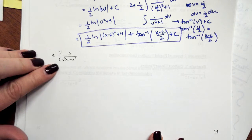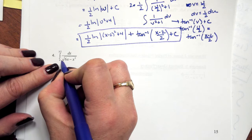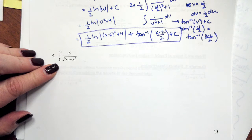So the last one is now just dealing with the definite interval. We're going to evaluate this from 0 to 3 halves.